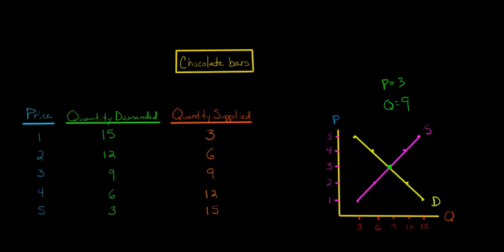So the magic of supply and demand is that the free market ultimately arrives at this point here, this equilibrium, where the quantity demanded equals the quantity supplied. And if you look back at our schedule, our demand schedule and our supply schedule, we see that at a price of $3, there are 9 chocolate bars demanded and 9 chocolate bars supplied. So that's our equilibrium in a free market.